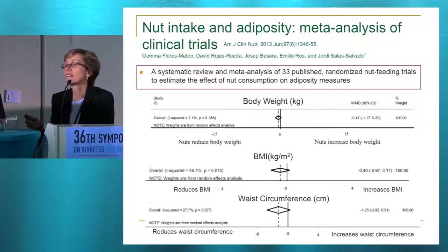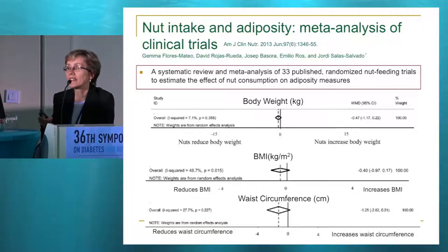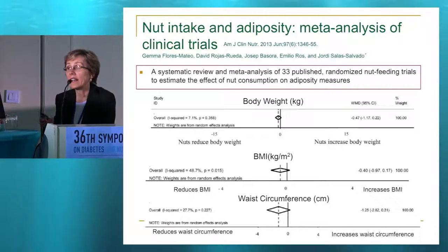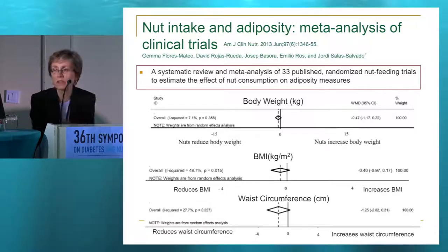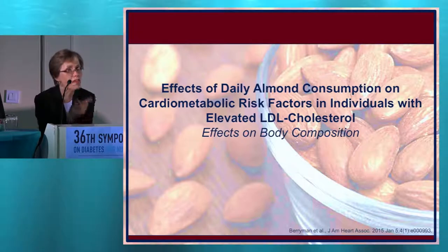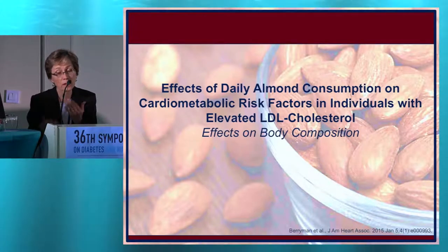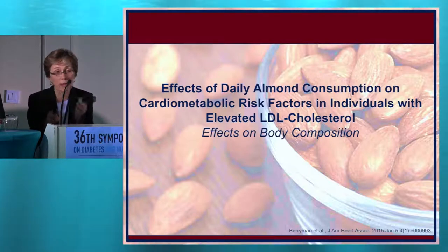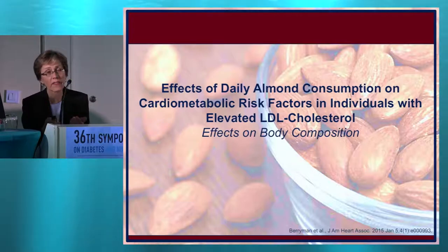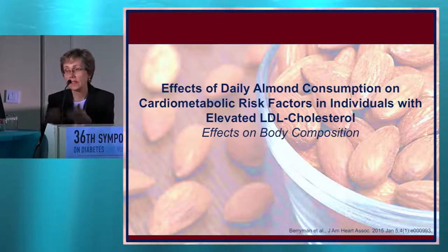Jordi Salas-Salvadó and colleagues did a meta-analysis of 33 clinical trials looking at nut intake and adiposity, and basically saw benefits on body weight, BMI, and waist circumference. Collectively, all of the data show benefits on multiple cardiometabolic risk factors, including adiposity — which is the common factor in explaining metabolic syndrome.